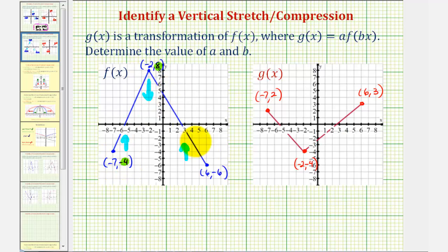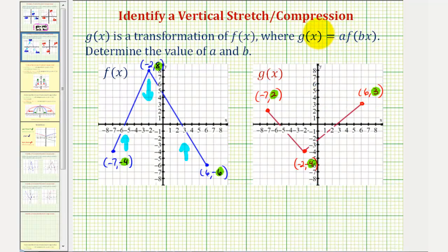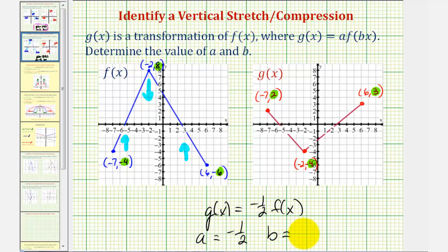Now let's analyze the corresponding y-coordinates. Our goal is to determine what constant we have to multiply these y-coordinates by to obtain these y-coordinates. We want to determine what times negative four would be equal to positive two. Negative four times negative one-half would be positive two, and eight times negative one-half would be negative four, and negative six times negative one-half would be positive three, which means a must be negative one-half. So g of x is equal to negative one-half times f of x, and therefore a is equal to negative one-half and b is equal to positive one.